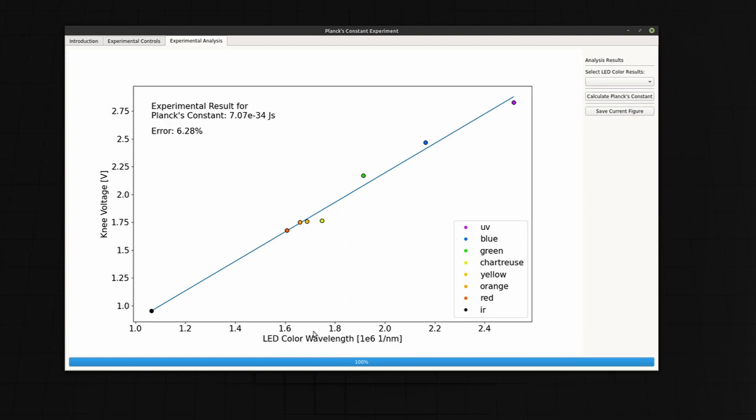So LEDs that emit long wavelength, or low energy photons, like infrared LEDs, are here on the left.